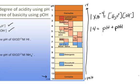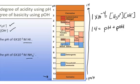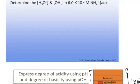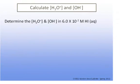You can see the inherent relationship between the hydronium ion concentration and hydroxide ion concentration in any relatively dilute aqueous solution. Now let's use this information to calculate the pH of a 6 times 10 to the minus 2 molar hydroiodic acid solution and a 6 times 10 to the minus 2 molar ammonium ion solution. First you have to calculate the hydronium ion concentration, and from that value you can calculate the pH.